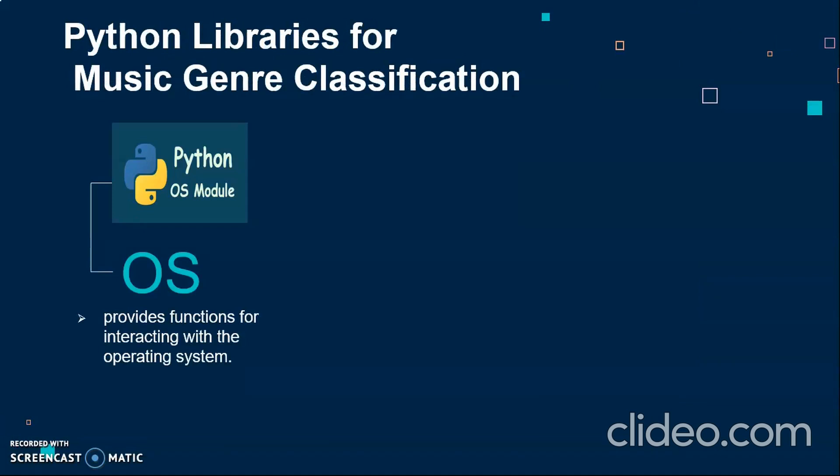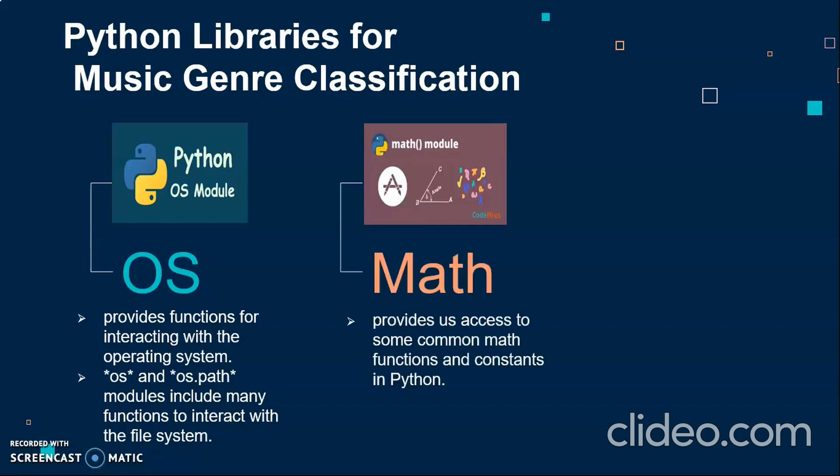Now the OS library. When we develop software, our software should interact with the operating system to work smoothly. Hence OS library provides us the function for interacting with the operating system. OS and OS path are the modules which help us with many functions to interact with the file system. As we will be using the KNN algorithm, the math function is used. The math library helps us to perform common functions related to math.